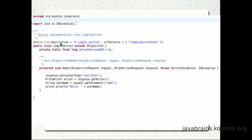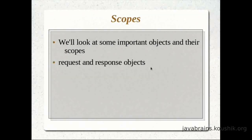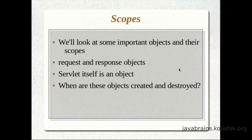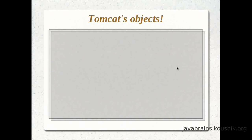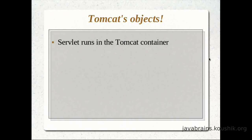We do not see any static method, so this servlet class itself has to be instantiated as an object for the doGet method to be called. So we have the request and the response objects and the servlet object itself. When are these created and destroyed, and who creates and destroys them? The answer is Tomcat. The web application is deployed in the Tomcat container, and Tomcat takes care of initializing the servlet and creating objects of the servlet.